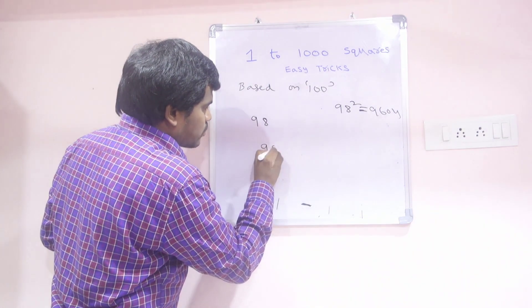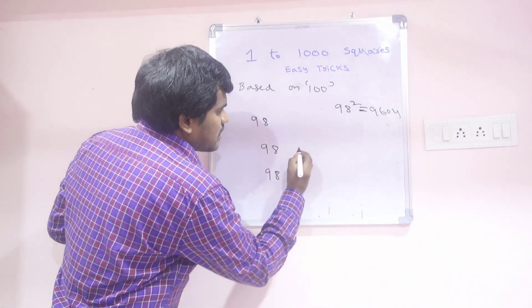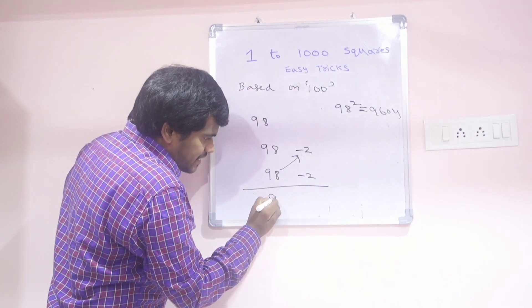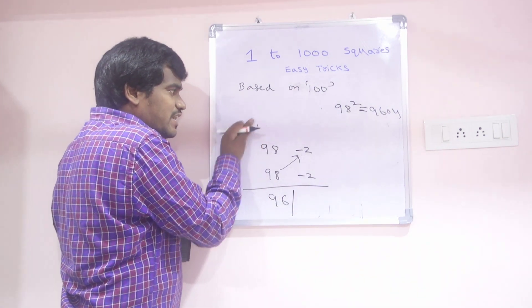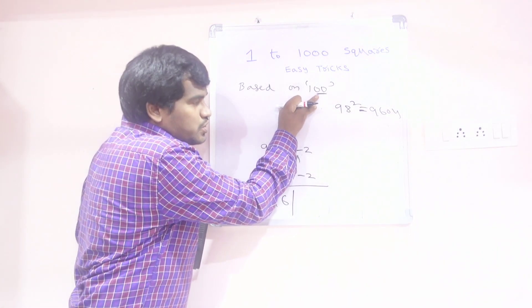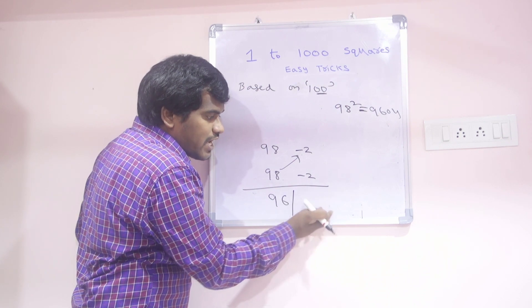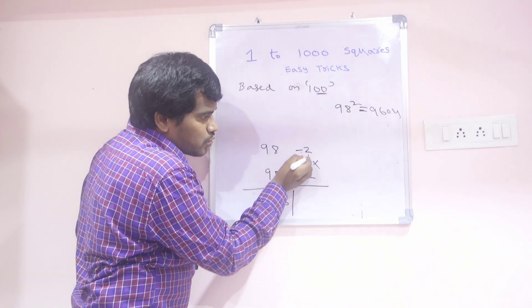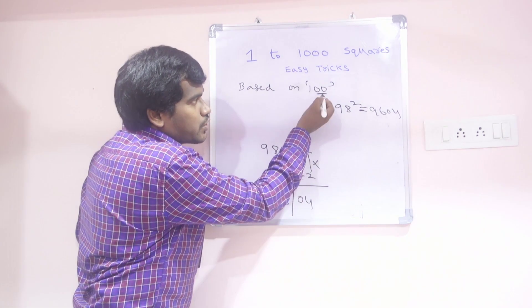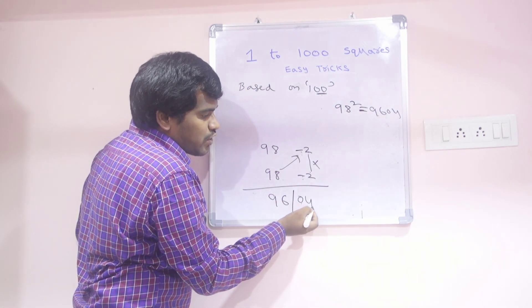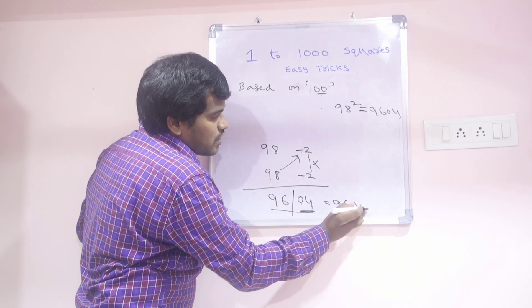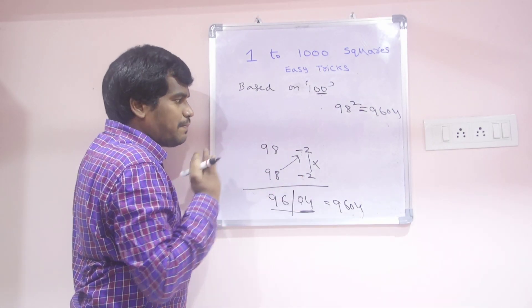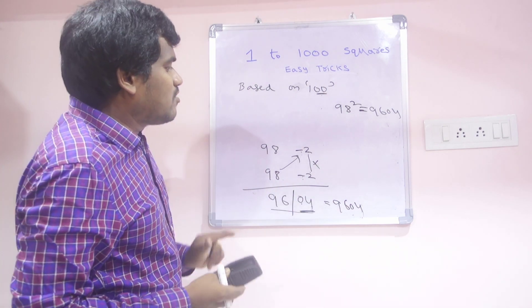Write 98 two times, with minus 2 each. Subtract: 98 minus 2 is 96. Now observe — 100 has 2 zeros, so after the slash we can take only 2 digits. Multiply: minus 2 times minus 2 — minus into minus is plus — 2 twos are 4, but we write 04 because we need 2 digits. So the answer is 9604, the square of 98.